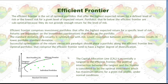We then draw the capital allocation line, or CAL, on this efficient frontier graph. We take the risk-free rate on the vertical axis and draw a tangent line to the efficient frontier curve. This tangent line represents the best possible capital allocation line.